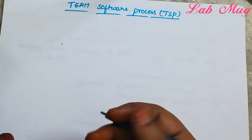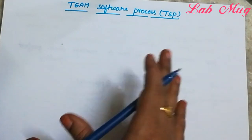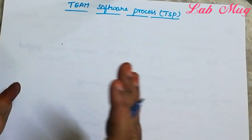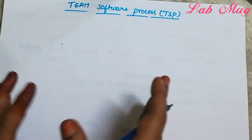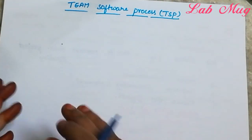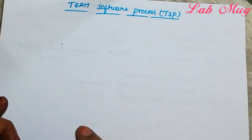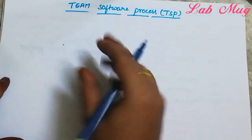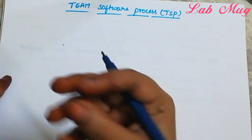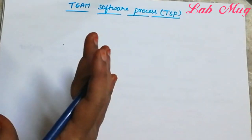Hi students. Software engineering next topic: team software process. Before this class we chose personal software process, that is PSP. So team software process is defined as an operational process framework.